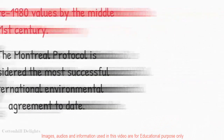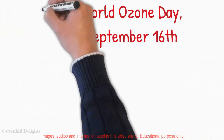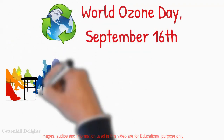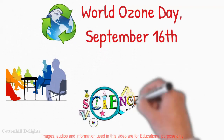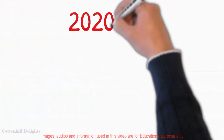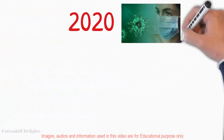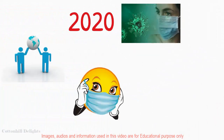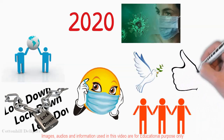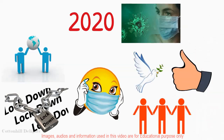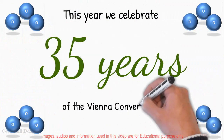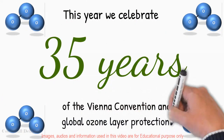World Ozone Day, held on September 16, celebrates this achievement. It shows that collective decisions and action, guided by science, are the only way to solve major global crises. In this year of the COVID-19 pandemic that has brought such social and economic hardship, the Ozone Treaty's message of working together in harmony and for the collective good is more important than ever. This year we celebrate 35 years of the Vienna Convention and 35 years of global ozone layer protection.